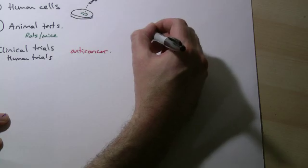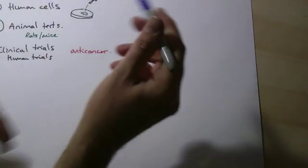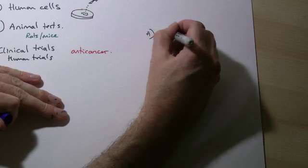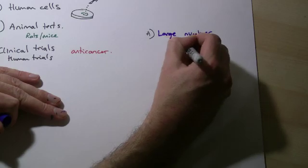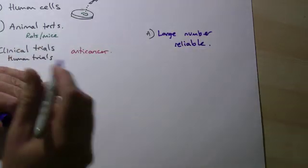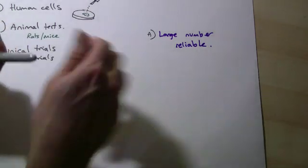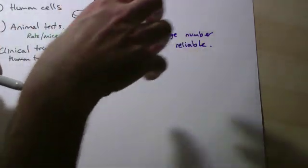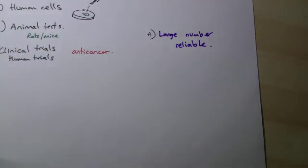Number one, let's use letters here. Let's use a different colour as well. You really need to use a large number. This makes your results more reliable. If you only tested it on a few people and you got certain results back, how can you be sure that those results would work for the rest of the population? You have to try and do it with the largest number of people that's reasonably possible.